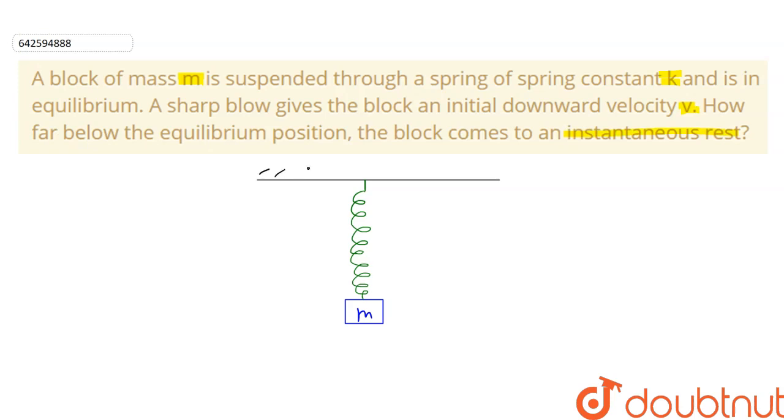So we have a block of mass small m suspended by a spring and the natural length of the spring is L.